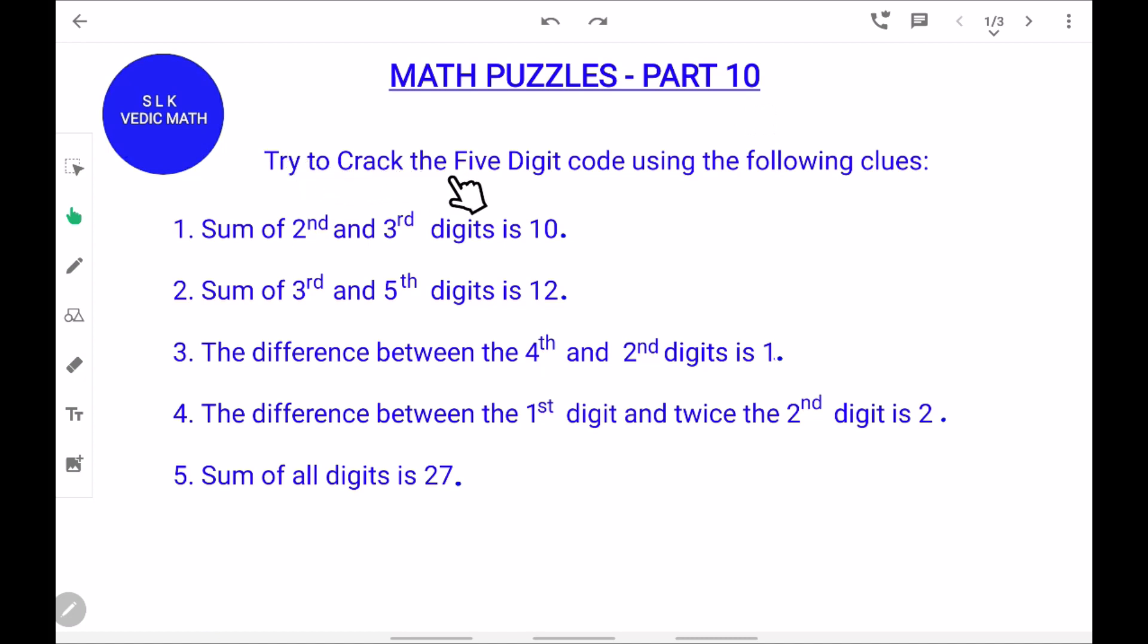Try to crack the 5 digit code using the following clues. Sum of 2nd and 3rd digits is 10. Sum of 3rd and 5th digits is 12. The difference between the 4th and the 2nd digit is 1. The difference between the 1st digit and twice the 2nd digit is 2. And the sum of all digits is 27.